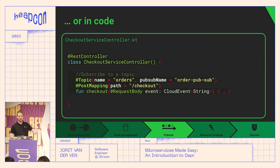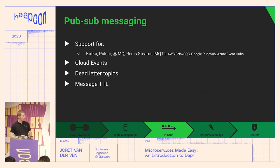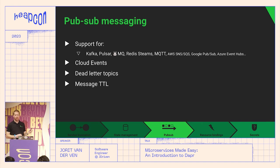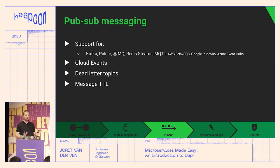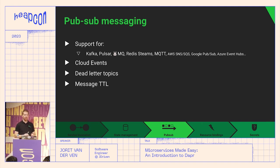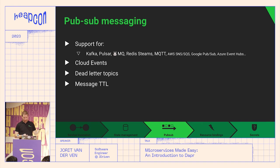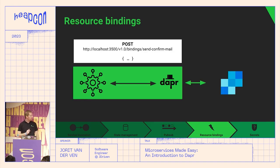Because we're developers and don't like YAML files, you can also just add one annotation if you use the SDK. In a Spring REST controller in Kotlin, you add one annotation stating: 'if you get a message on topic orders on the pub/sub name, post it to this REST endpoint' — and you define the endpoint below. Dapr supports Apache Kafka, Apache Pulsar, RabbitMQ, Redis Streams, MQTT for IoT, and all cloud messaging systems. Dapr automatically wraps all events into CloudEvents, a W3C standard for JSON events, unless you turn it off. Dead letter topics are also supported.